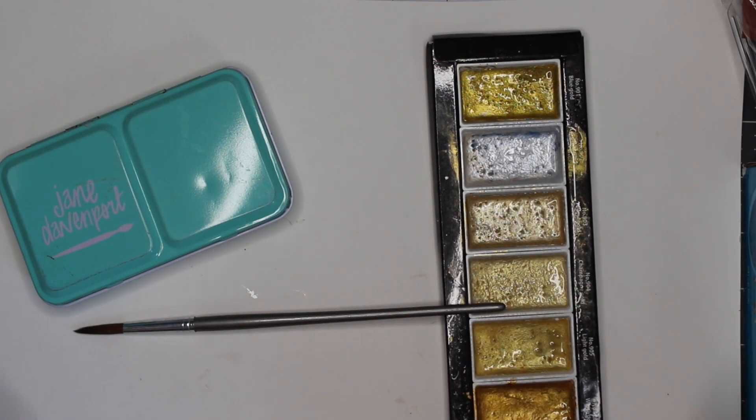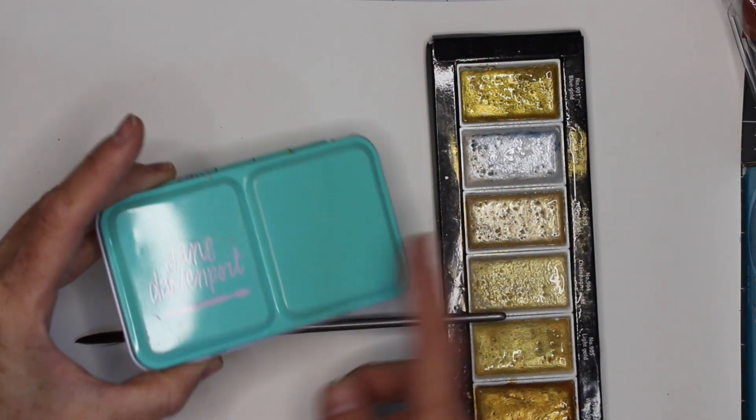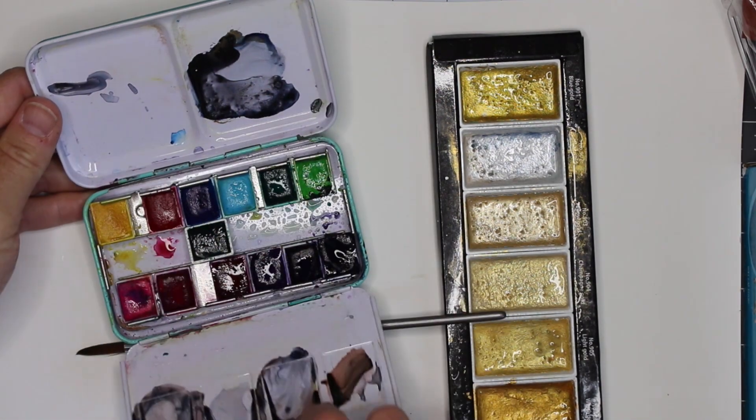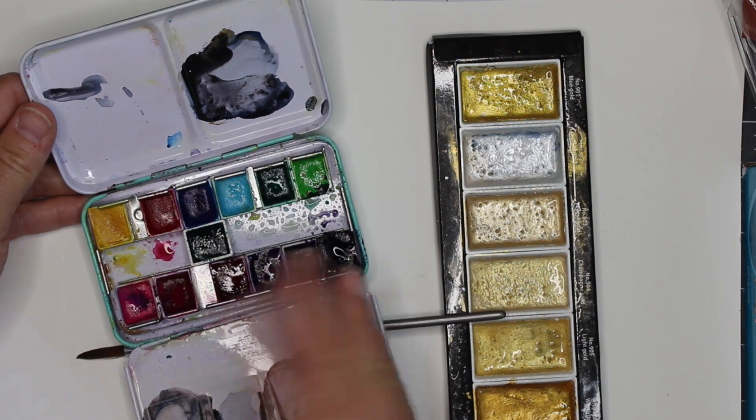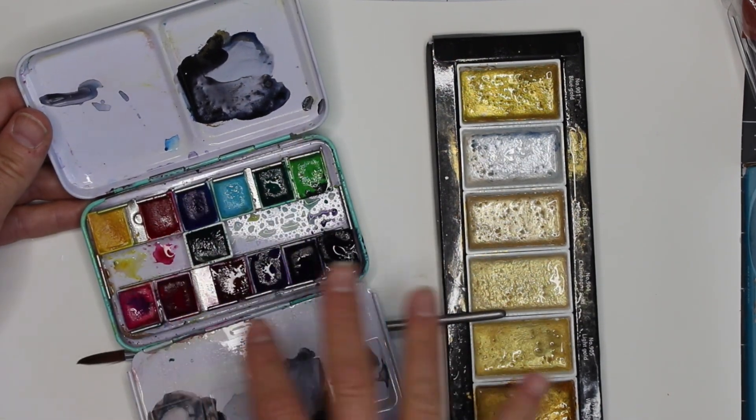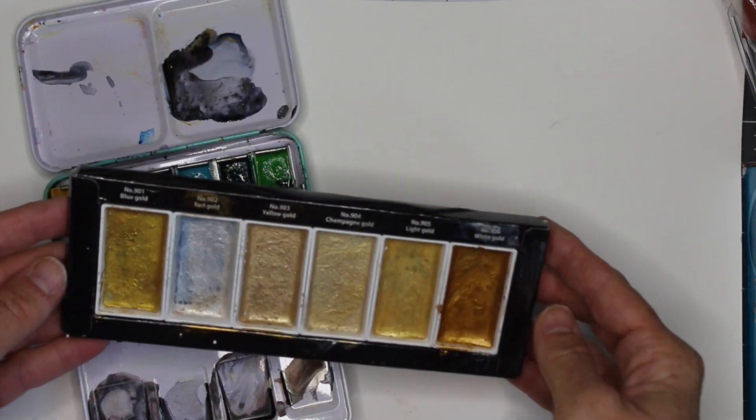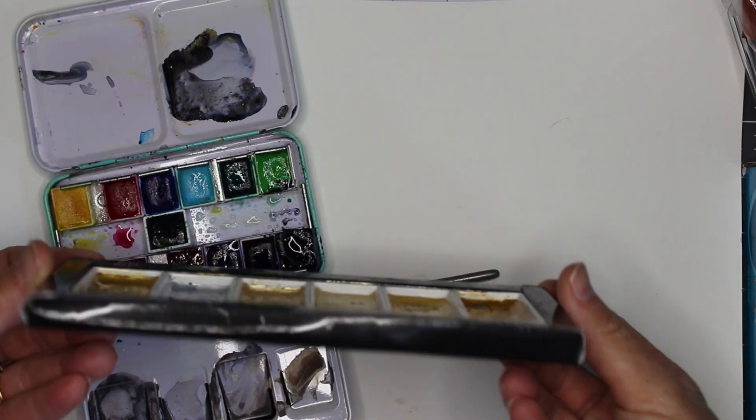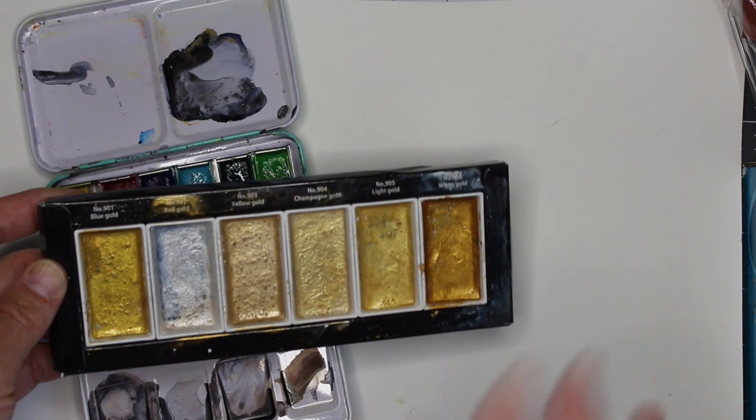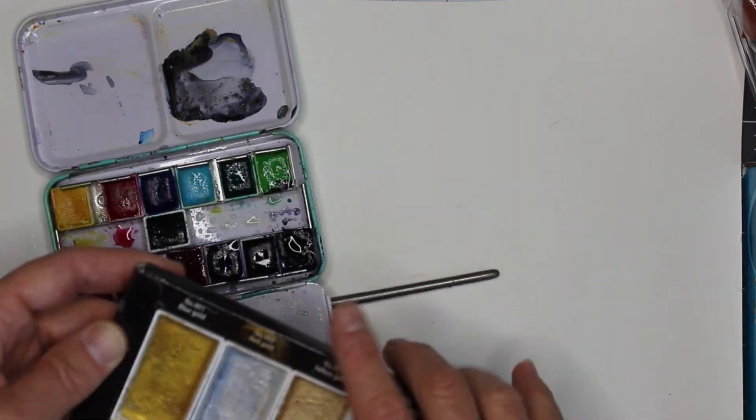I'm using basic watercolor supplies for this project, including my Jane Davenport palette. I liked it because it had nice bright colors and a primary bent, which is what I was going for. I'm also going to use a mica-based watercolor product, the Gansai Tambi Starry Night set. I also really like the Altenew set, but I'm just going to be using a little bit of this mica to set it off.